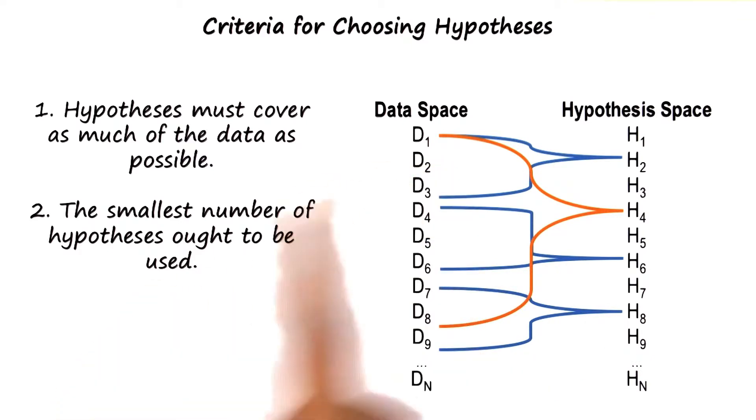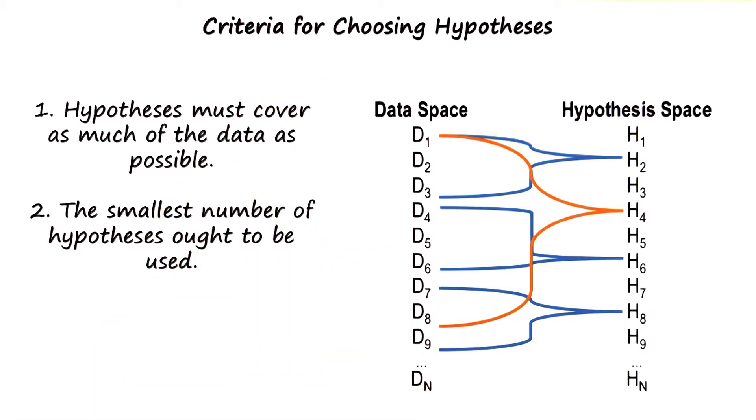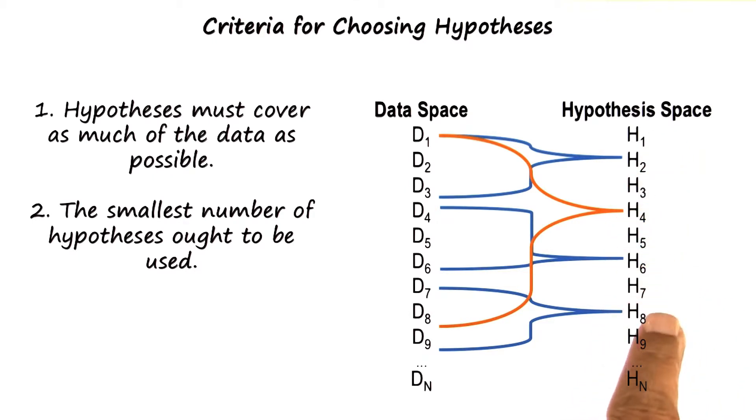In general, this is a balancing act between these two principles. We want to both maximize the coverage and maximize the parsimony. Thus, in this particular example, we may go with H4 and H8. The two together explain all the data, and in addition, the set of these two hypotheses is smaller than the set of hypotheses H2, H6, and H8.